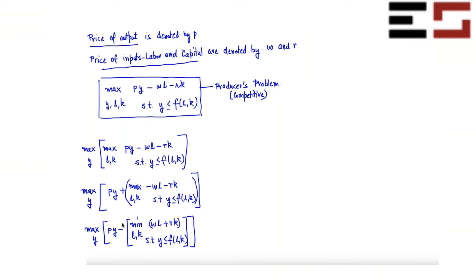Once you have this form, the problem is easily doable. I'm going to solve the inner minimization problem for every y. This is known as the cost minimization problem. Given input prices w and r, you choose labor and capital to minimize cost, subject to the constraint that you attain at least y level of output — because you want to sell y units, you need to produce at least that much.